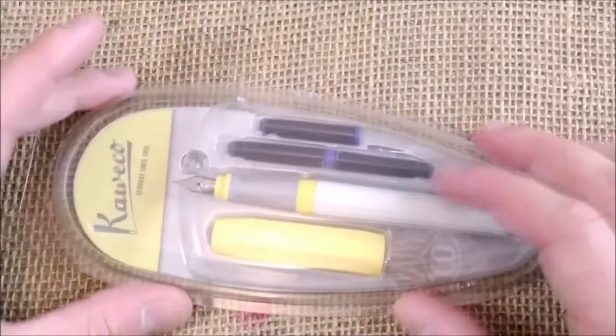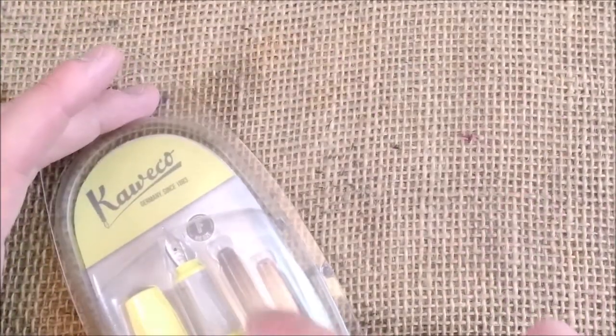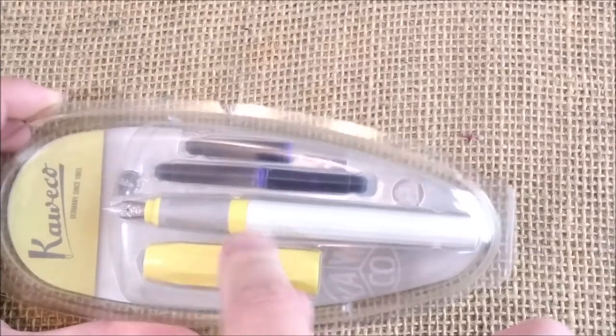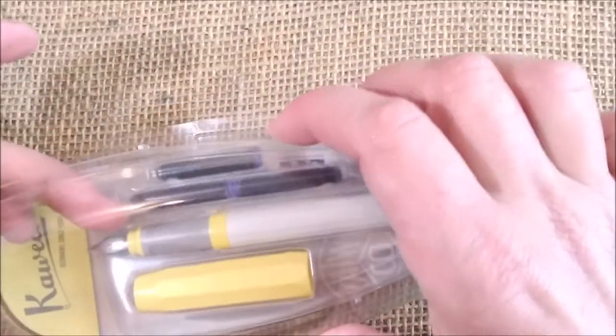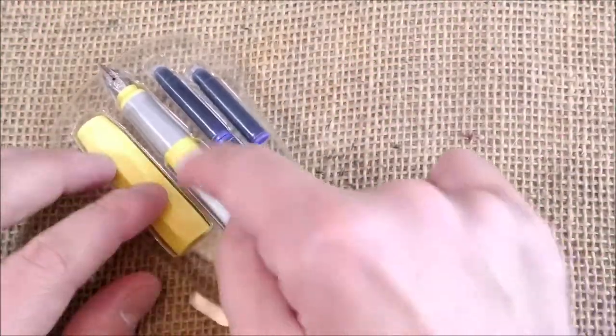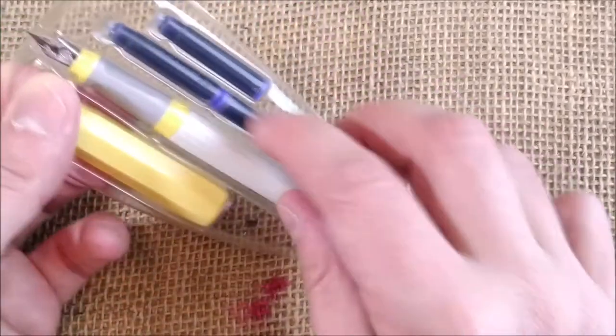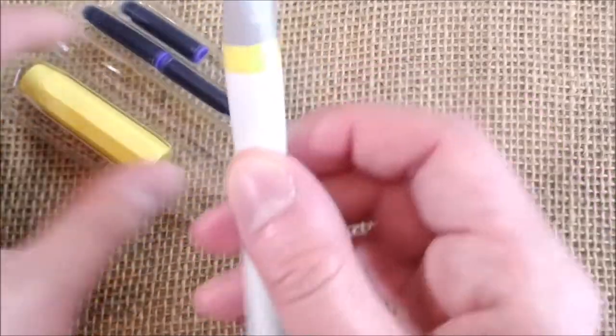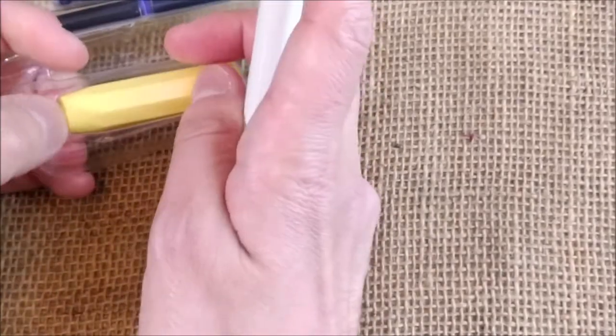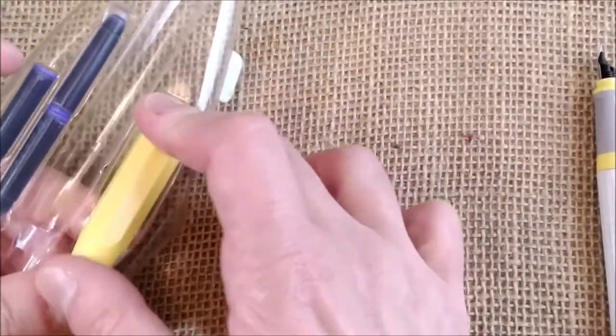It comes inside this plastic blister with three blue ink cartridges from Kaweco and an empty cartridge inside, which is nice to get empty cartridges at least for me that I usually refill them, and another blue one inside. So you get four cartridges, three more out there and an empty one inside. I think it's quite a good pack.